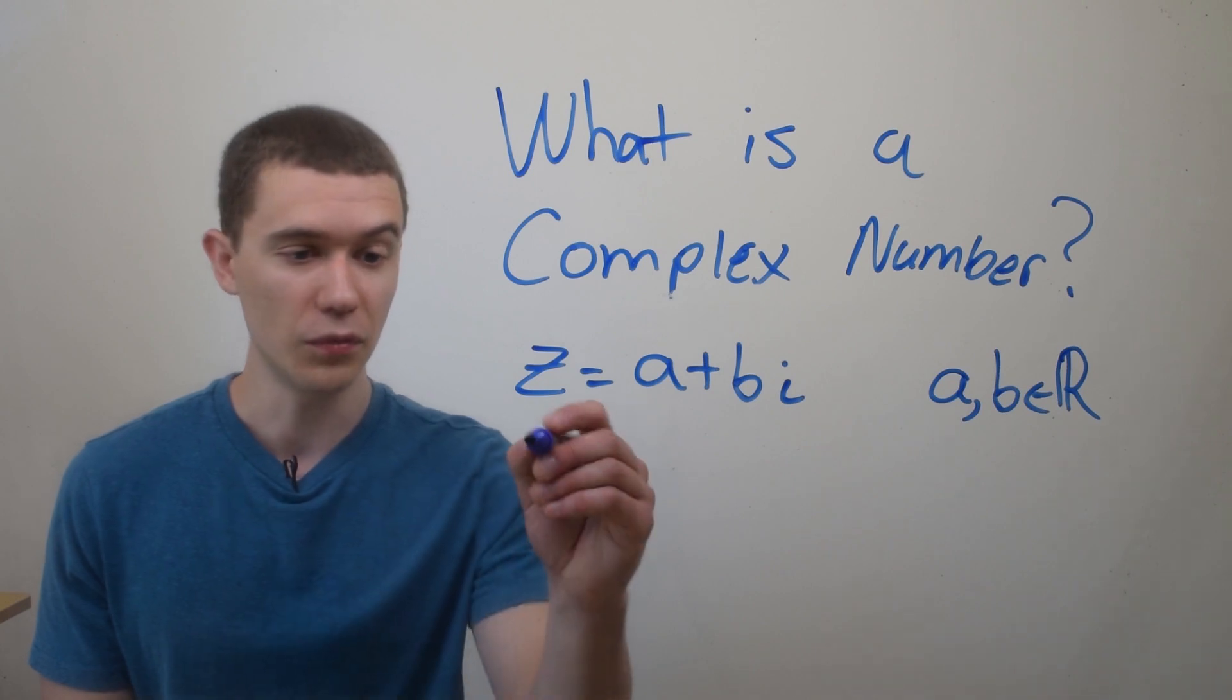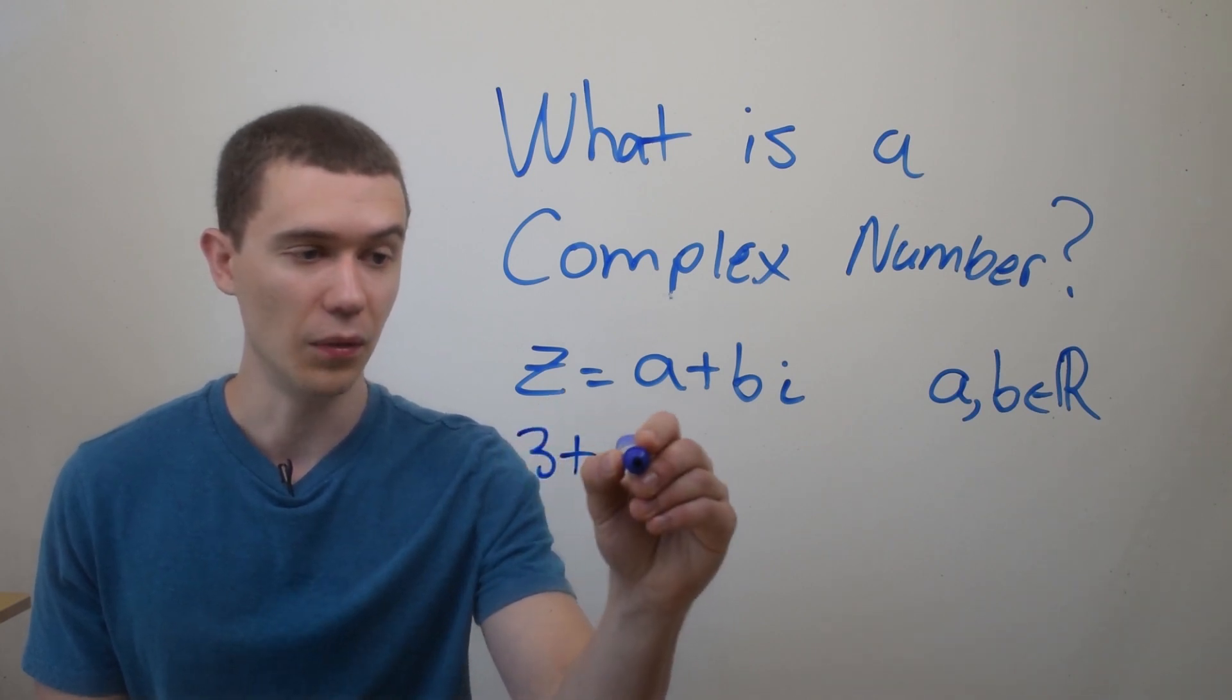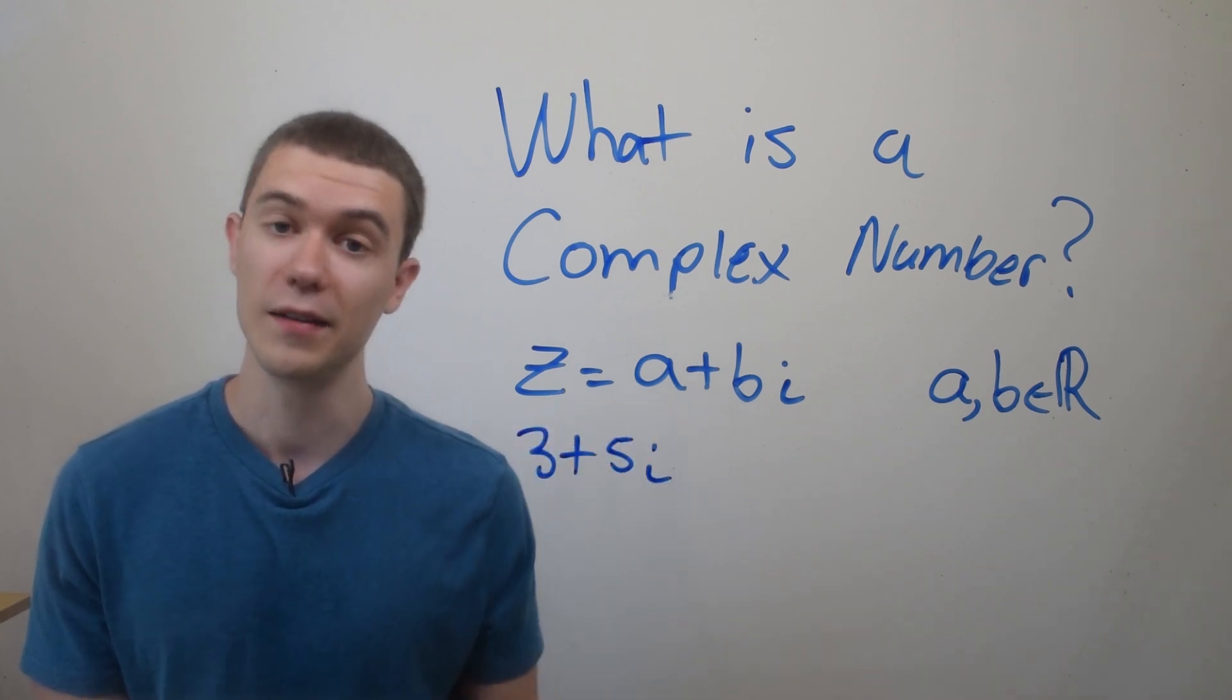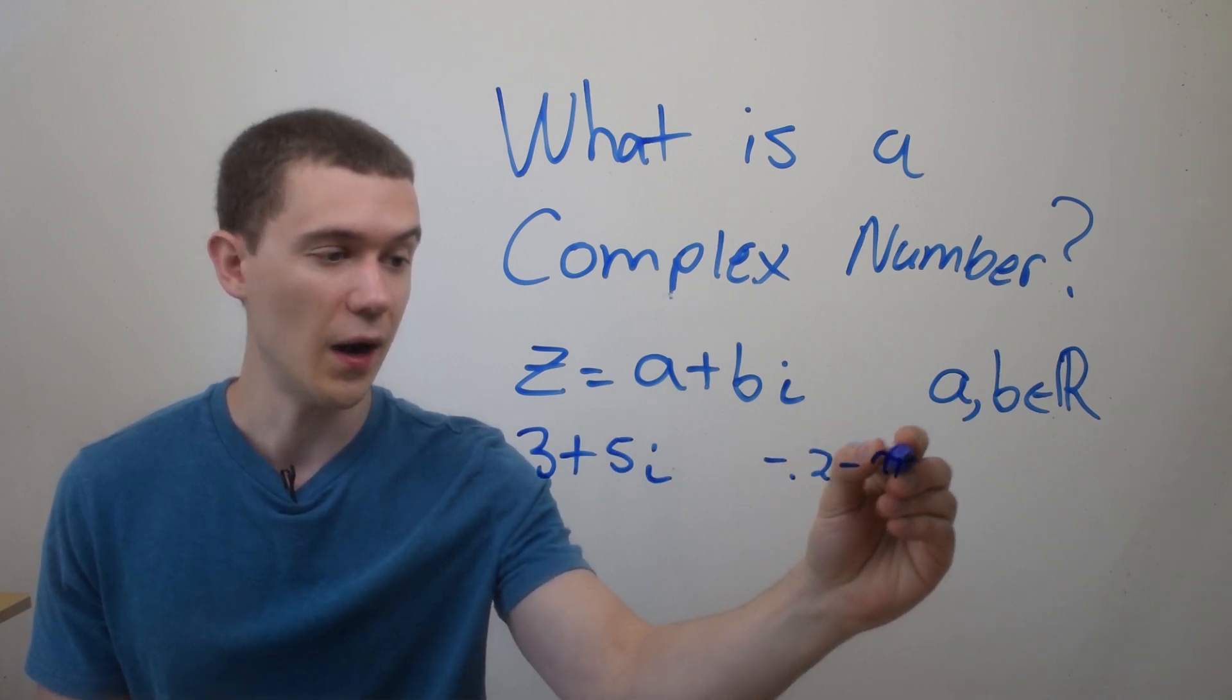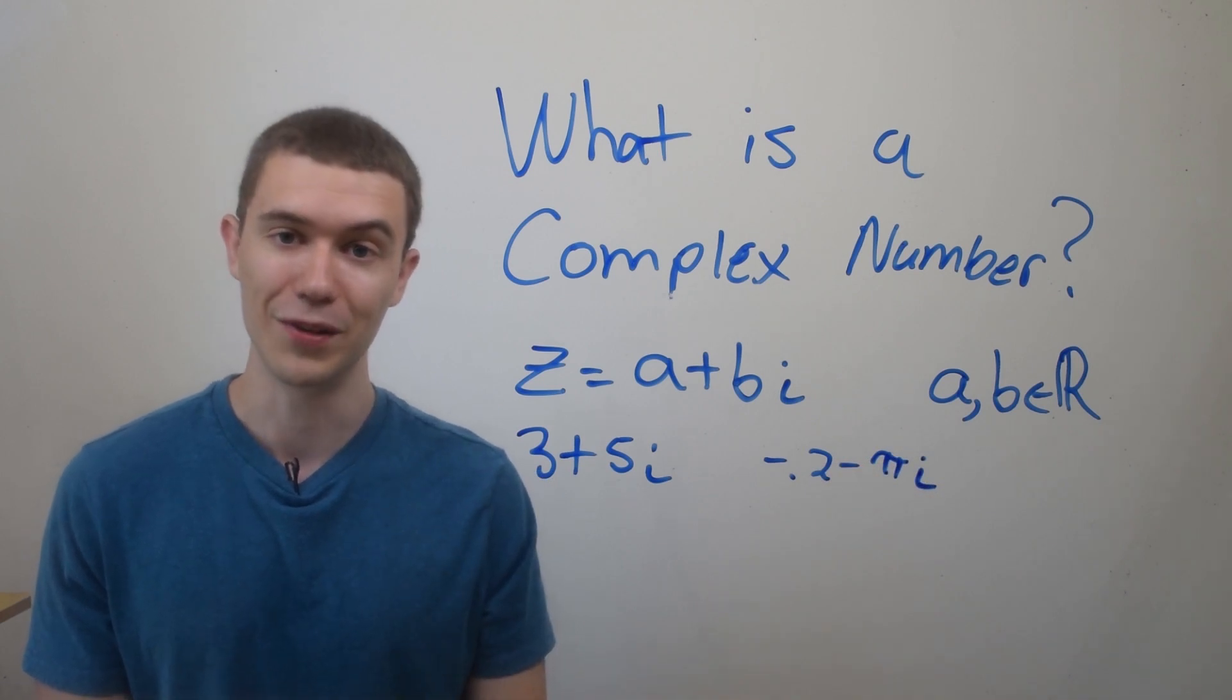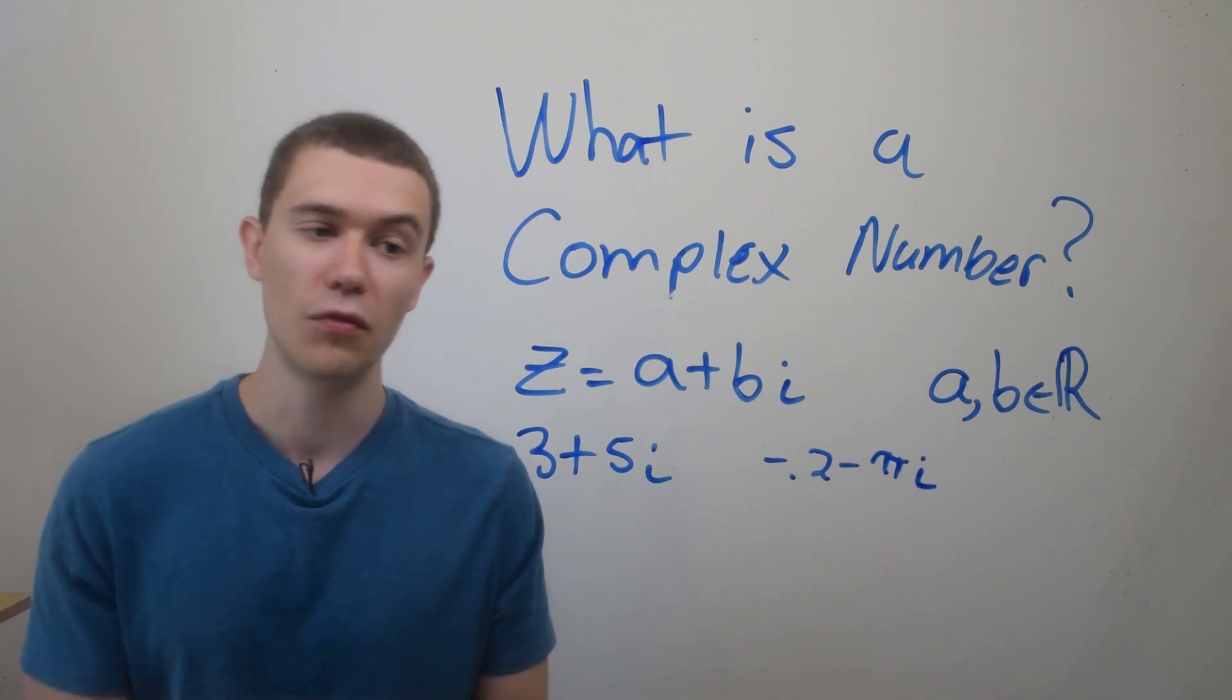Some examples: 3 plus 5i is a complex number. Maybe minus 0.2 minus pi i - that's a more interesting complex number. They all have this form, with a real part and an imaginary part.